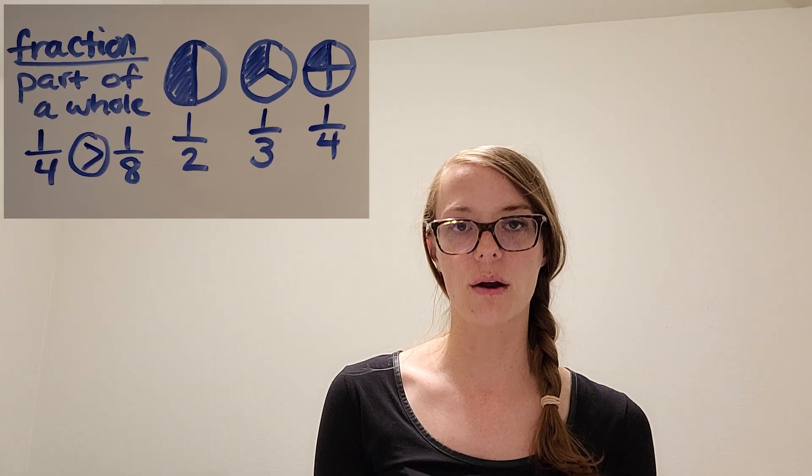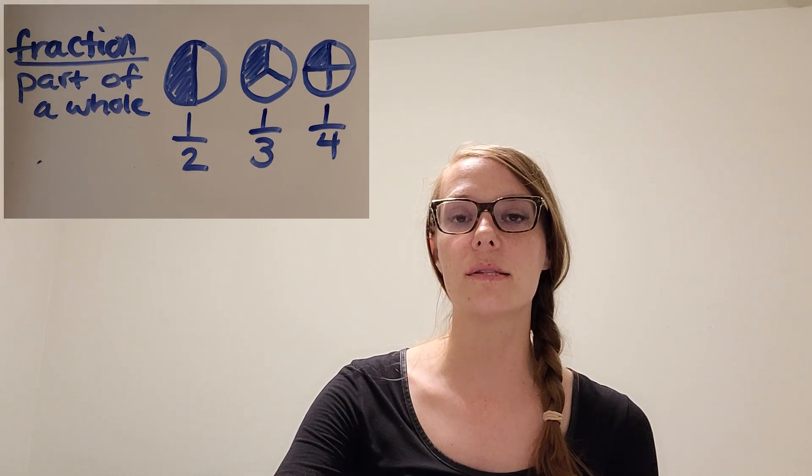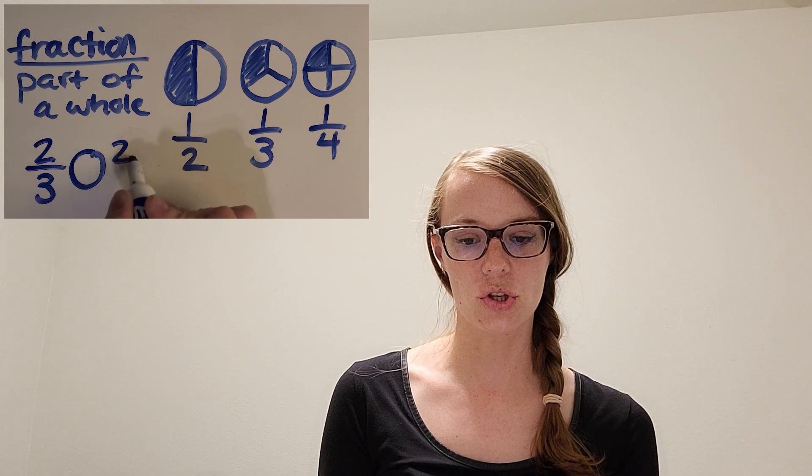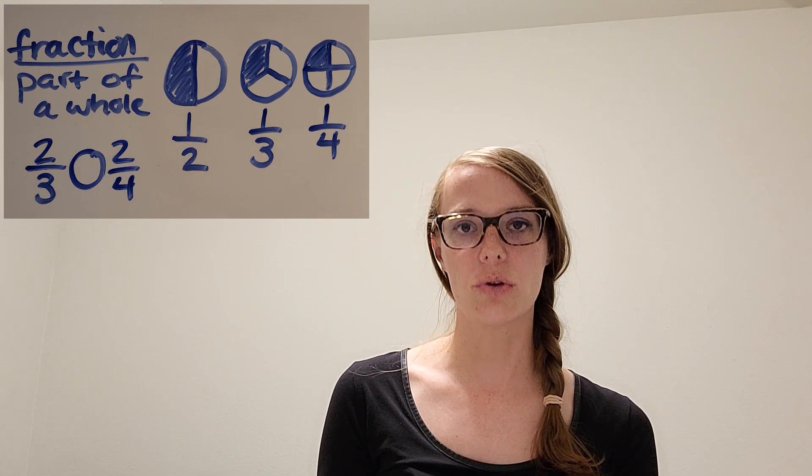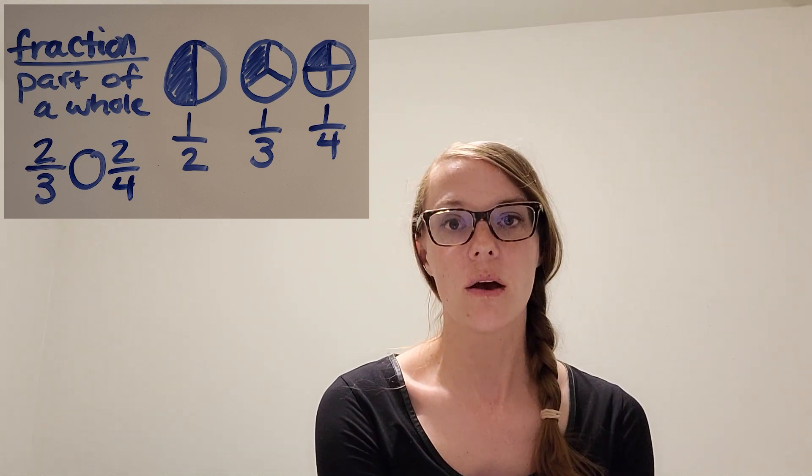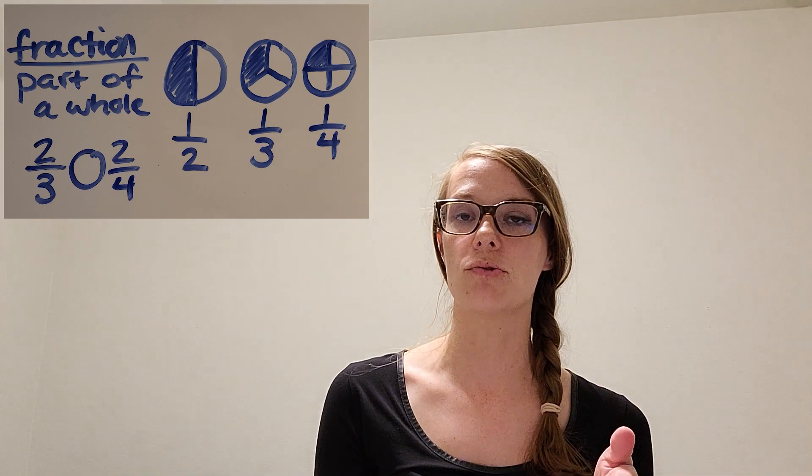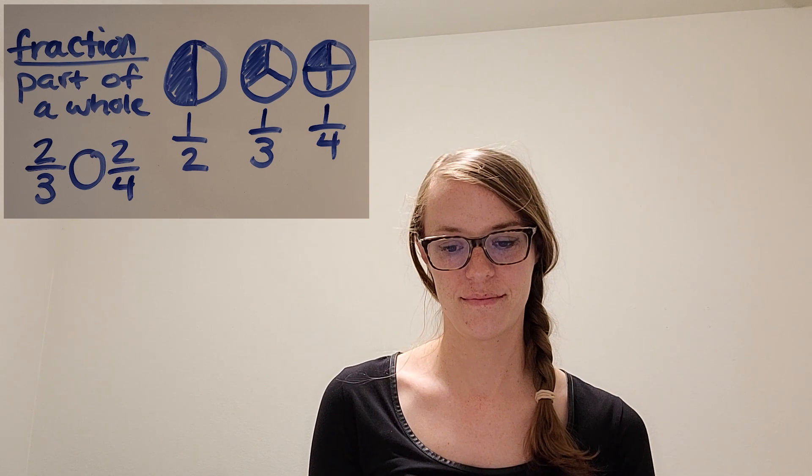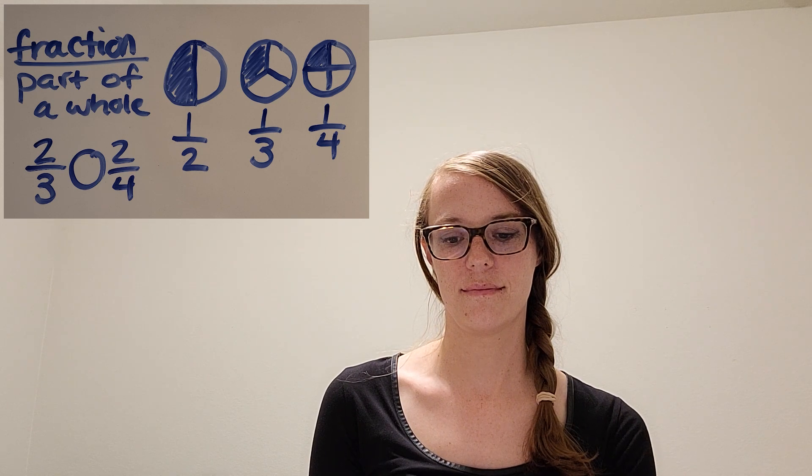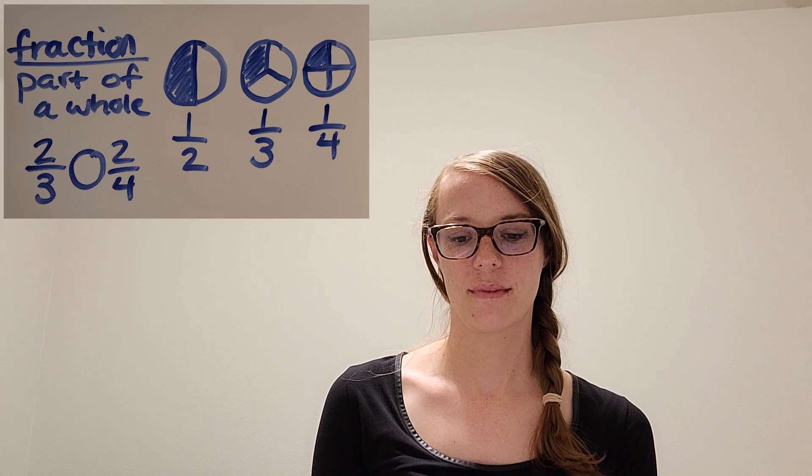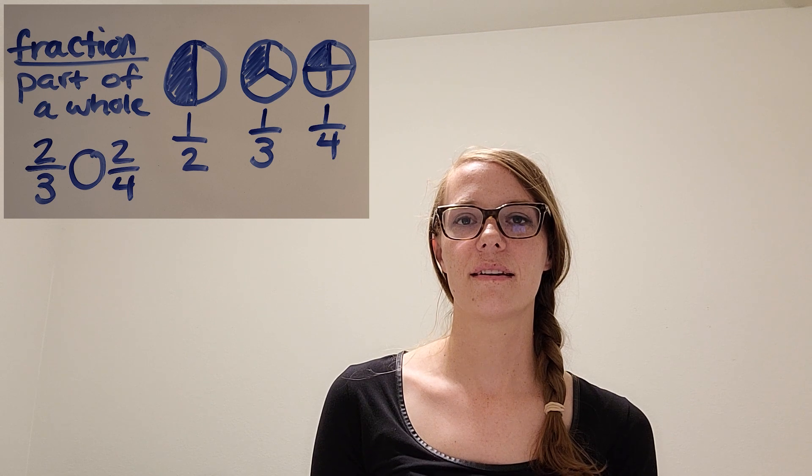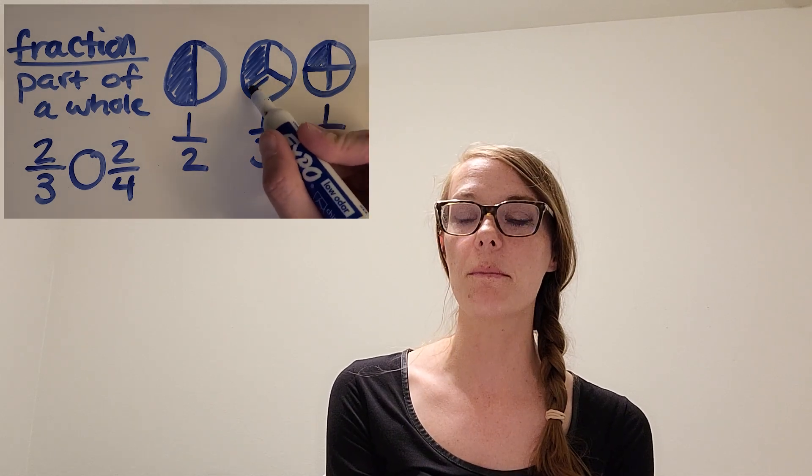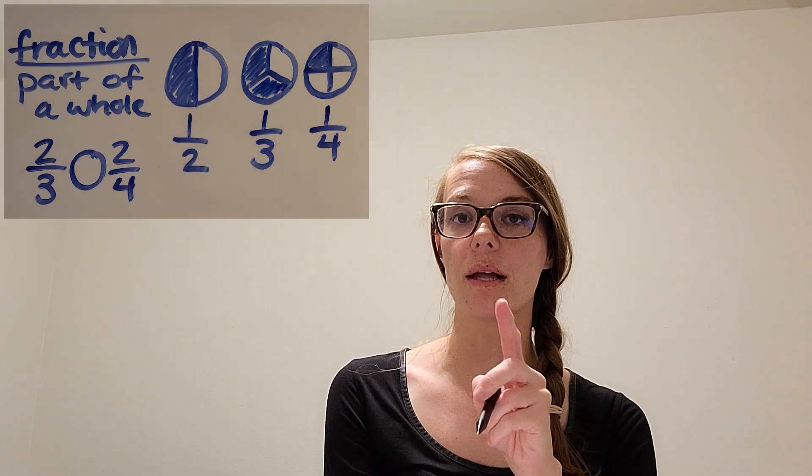Okay, now let me give you one where the numerator is more than one. Let's see what we think about that. What if it was something like two-thirds compared to two-fourths? We're used to a one being up there in the numerator spot, so what do you think? What if I put a two there? Think about my picture that I drew, and it might help you figure this one out.